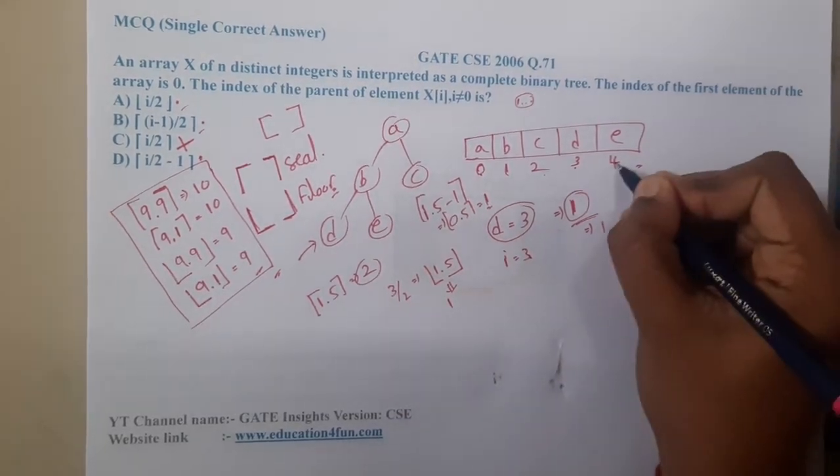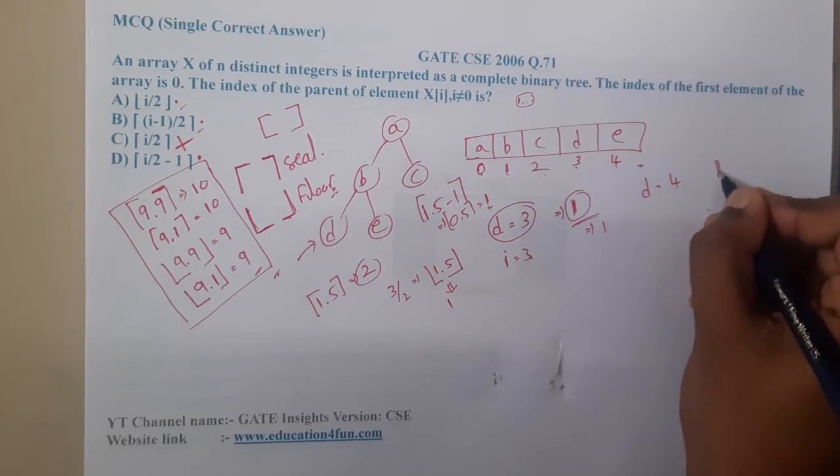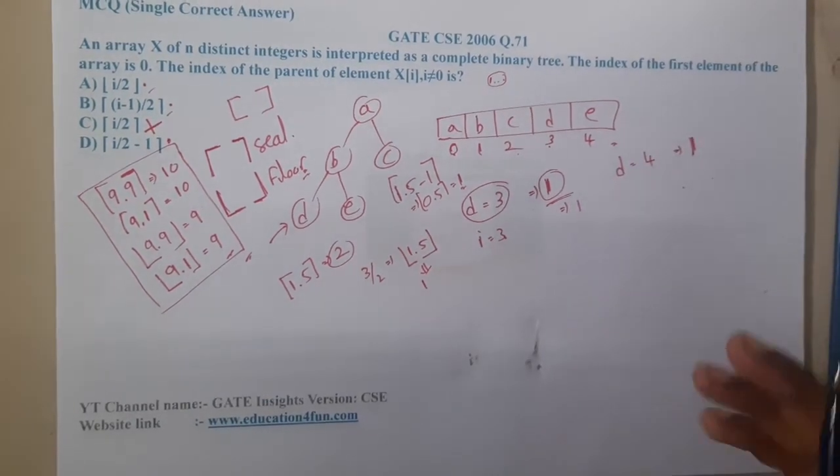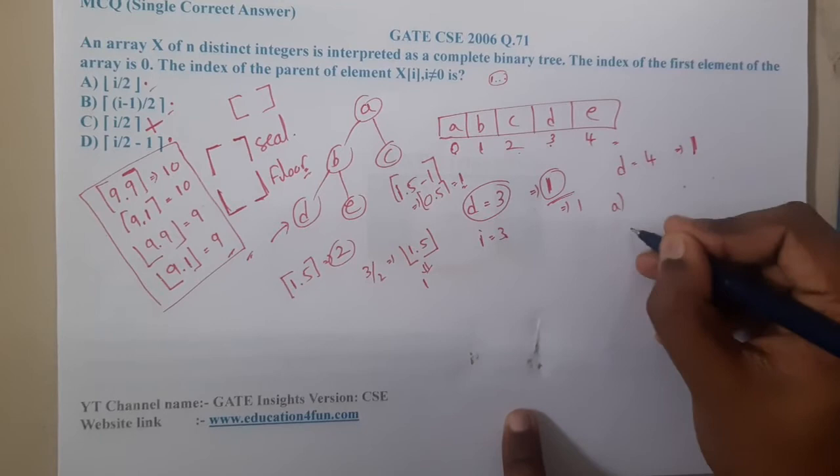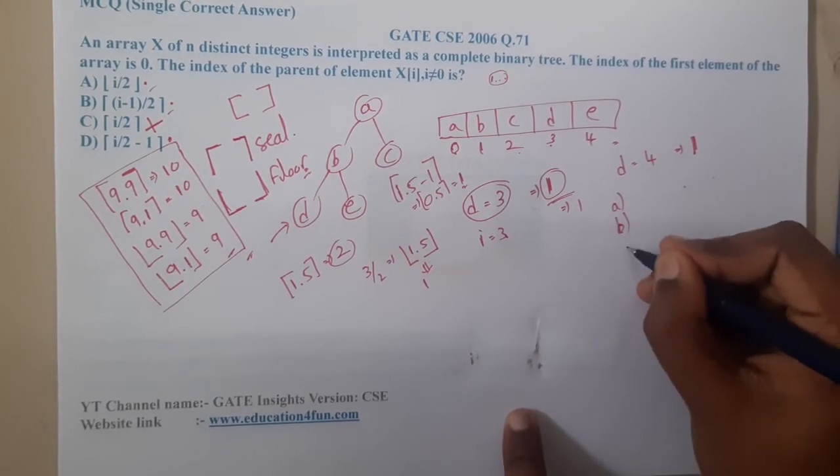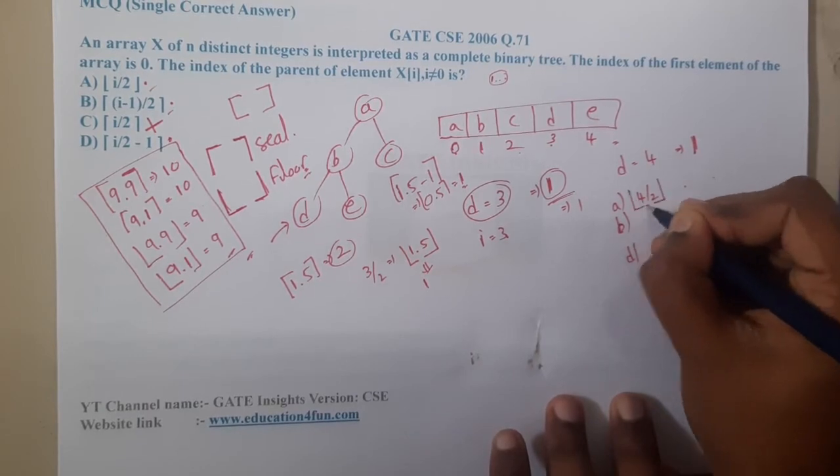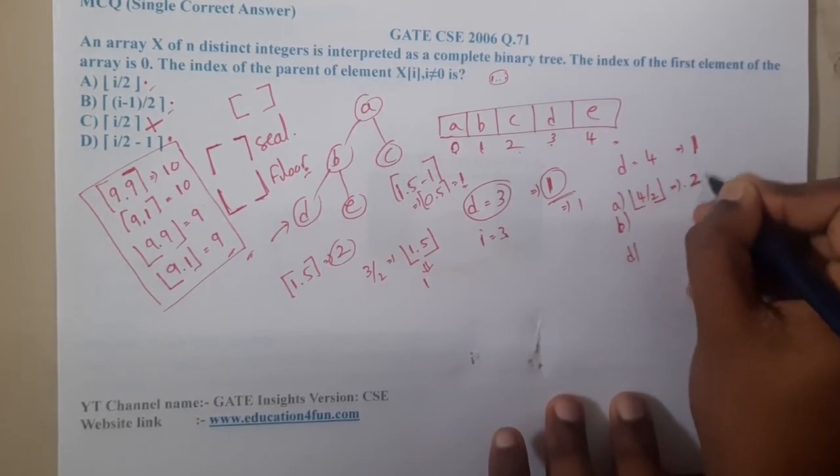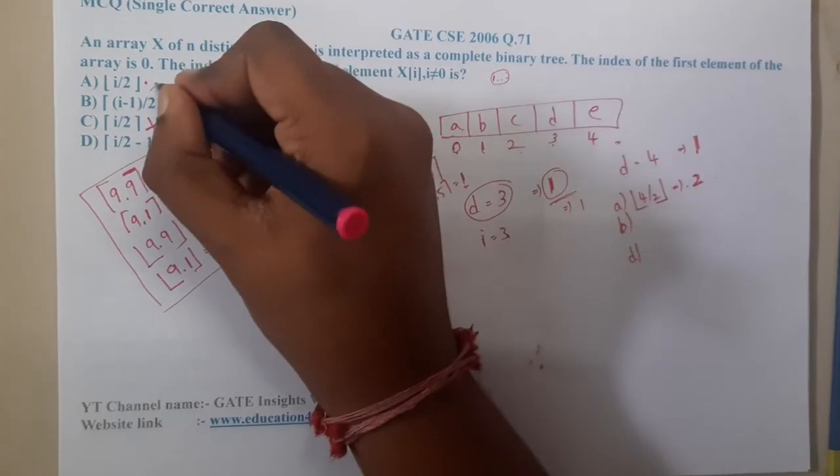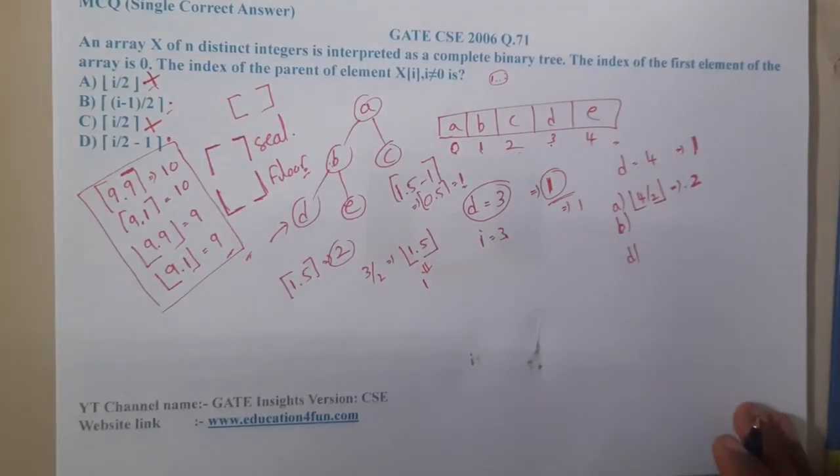For 3 we got the correct answer. Let us take for 4. We are having fourth element, for that also you should get the answer as 1. Let us substitute. We are having only 3 options now: A, B, and D. Let us substitute 4. 4 by 2 lower value - what we are getting? We are getting 2, but our answer is 1. Hence option A is also wrong.